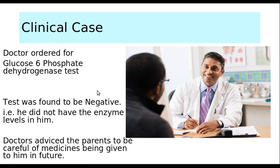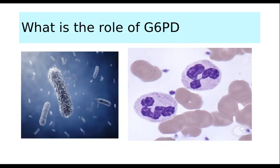The test was found to be negative, meaning he didn't have the enzyme in his RBCs. The doctor advised the parents to be careful while giving medicines to this child, and insisted that the parents inform doctors about this condition before any medicines are prescribed. Now, what does the Glucose 6 Phosphate Dehydrogenase enzyme have to do with all this?